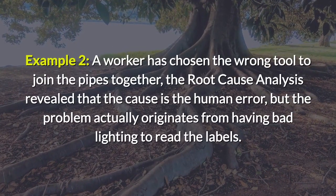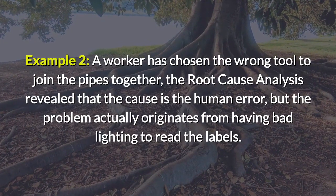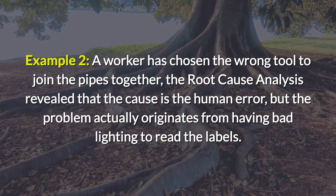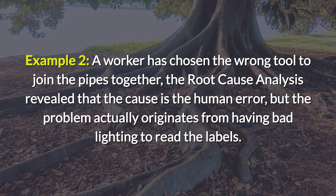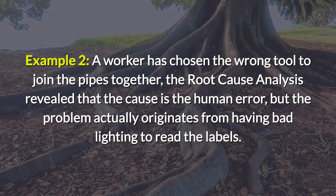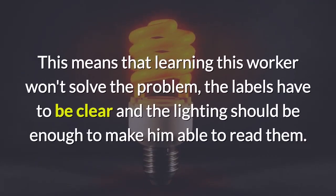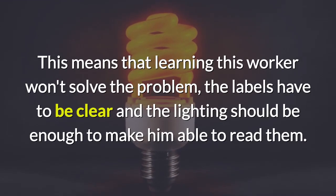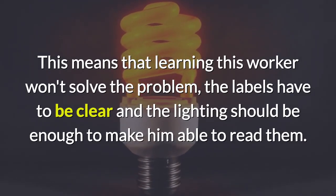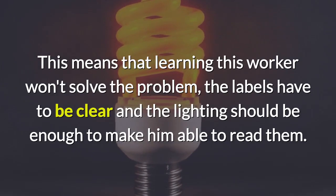Example two: a worker chose the wrong tool to join pipes together. The root cause analysis revealed the cause was human error, but the problem actually originated from bad lighting that made it difficult to read the labels. This means that retraining the worker alone won't solve the problem — the labels have to be clear and the lighting must be sufficient for him to read them.